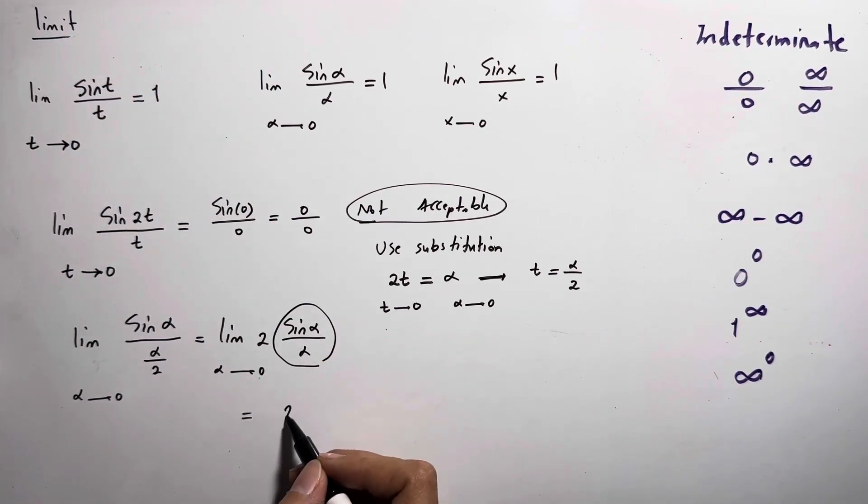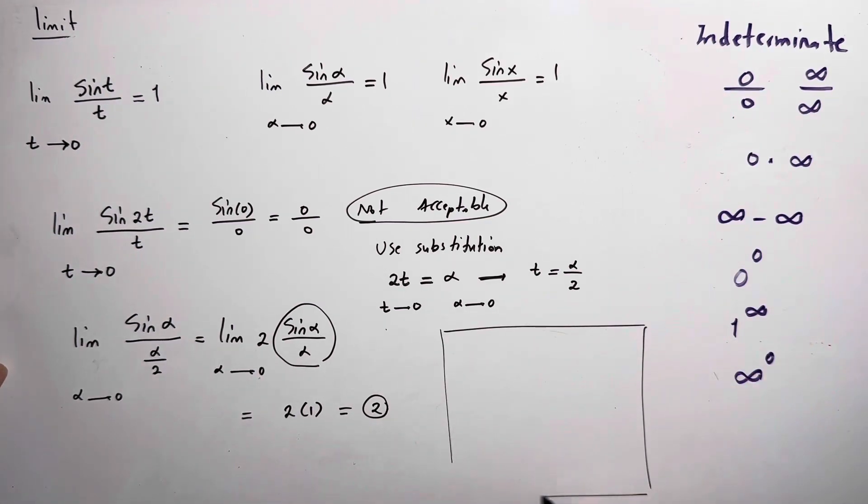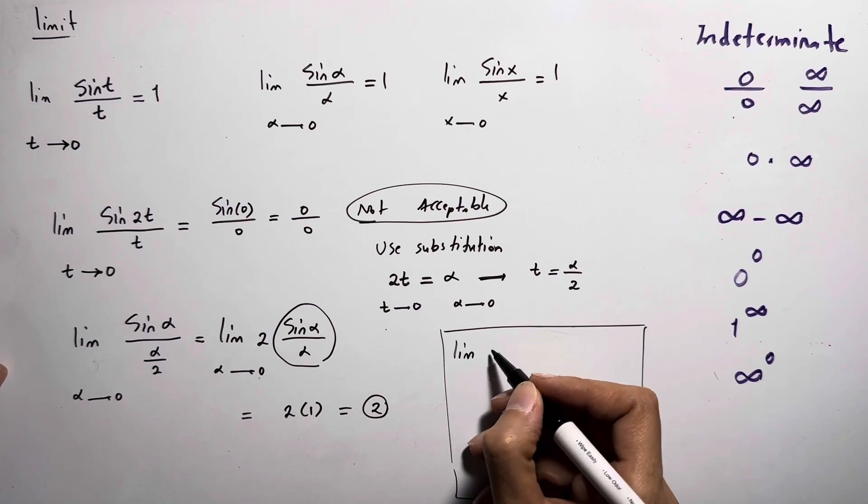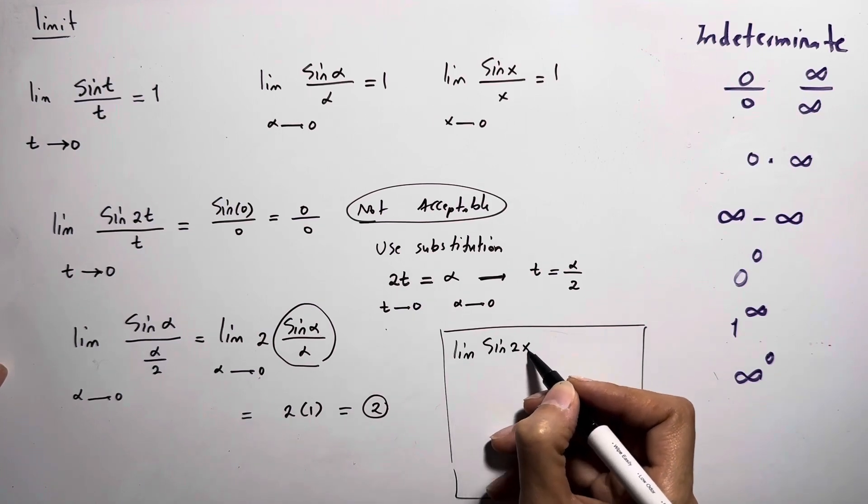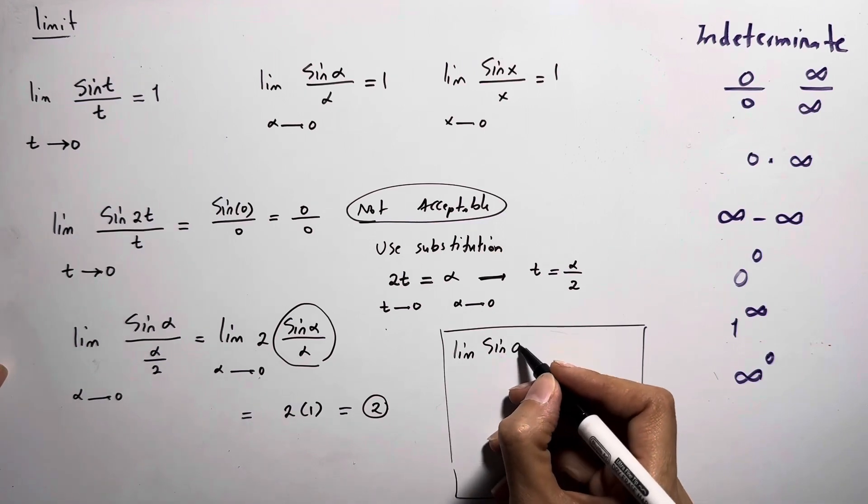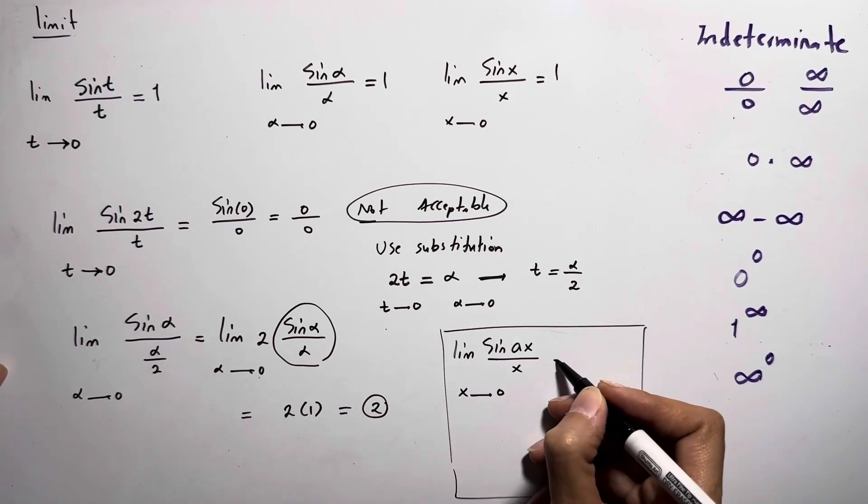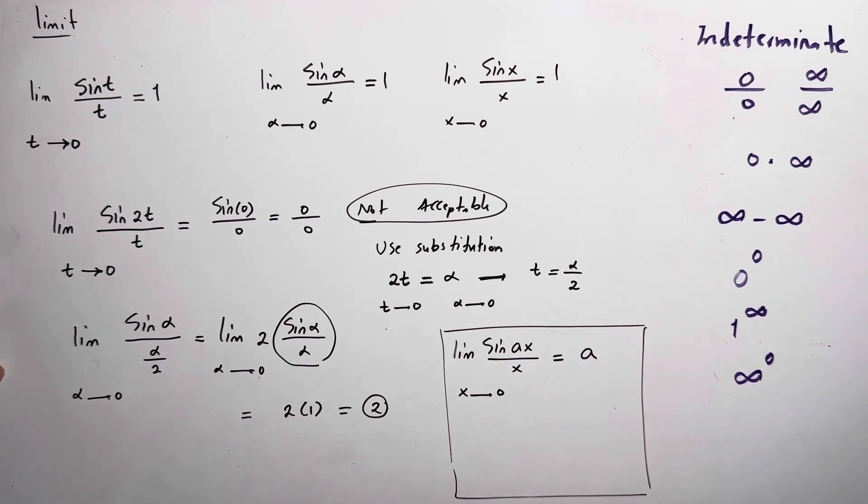In general, if you have limit of sine 2x or 3x or ax in general, ax divided by x as x goes to 0, it is always equal to a.